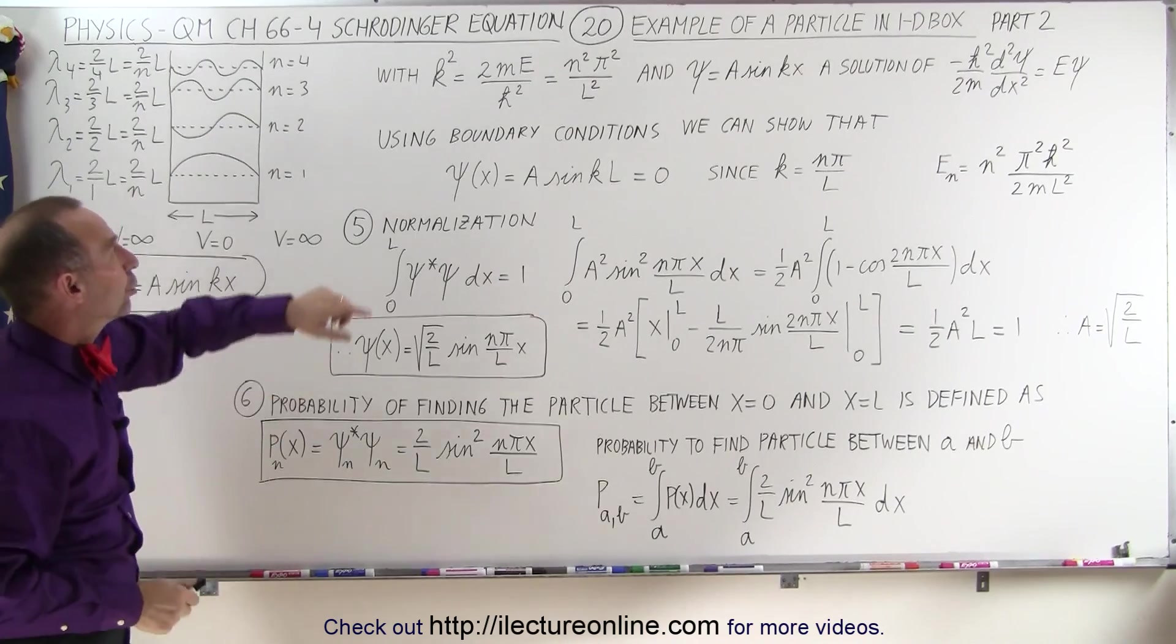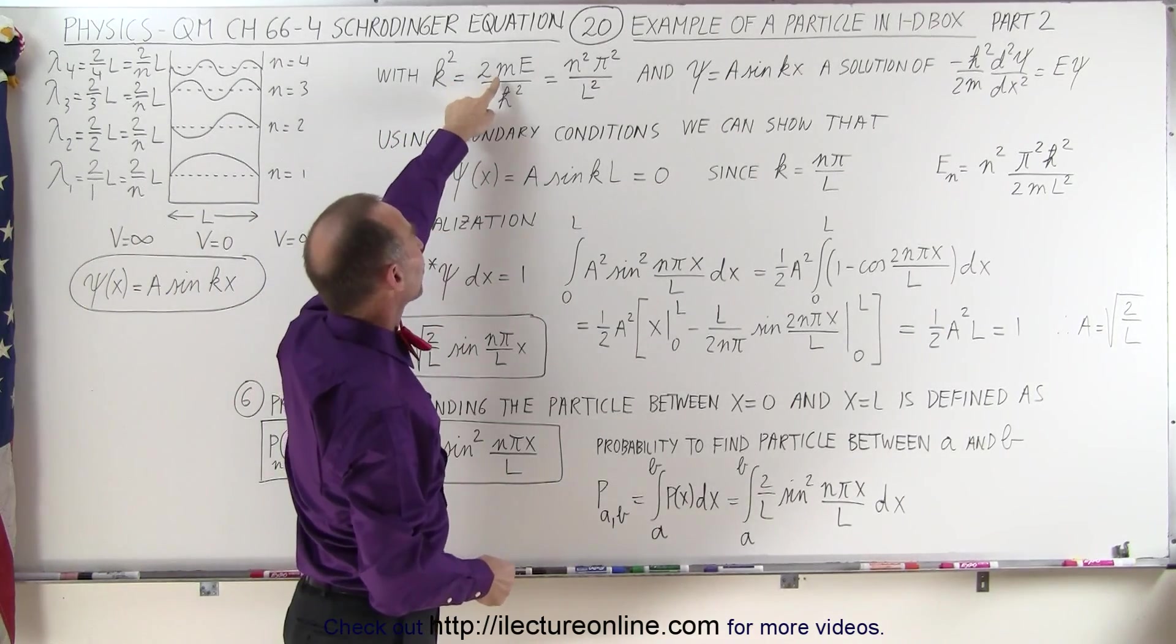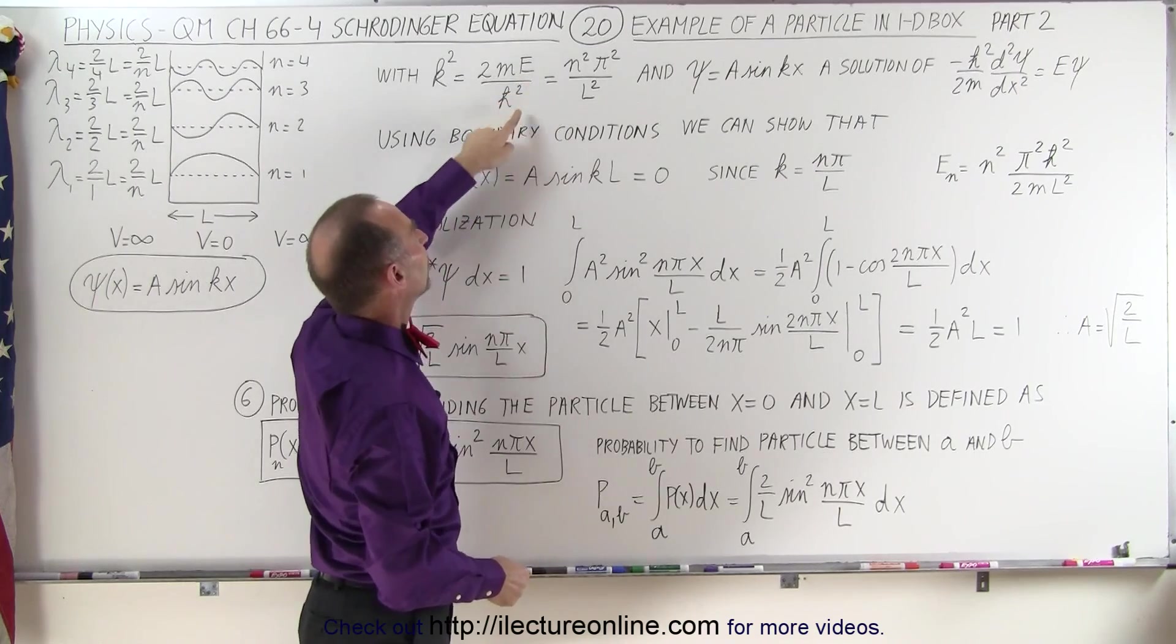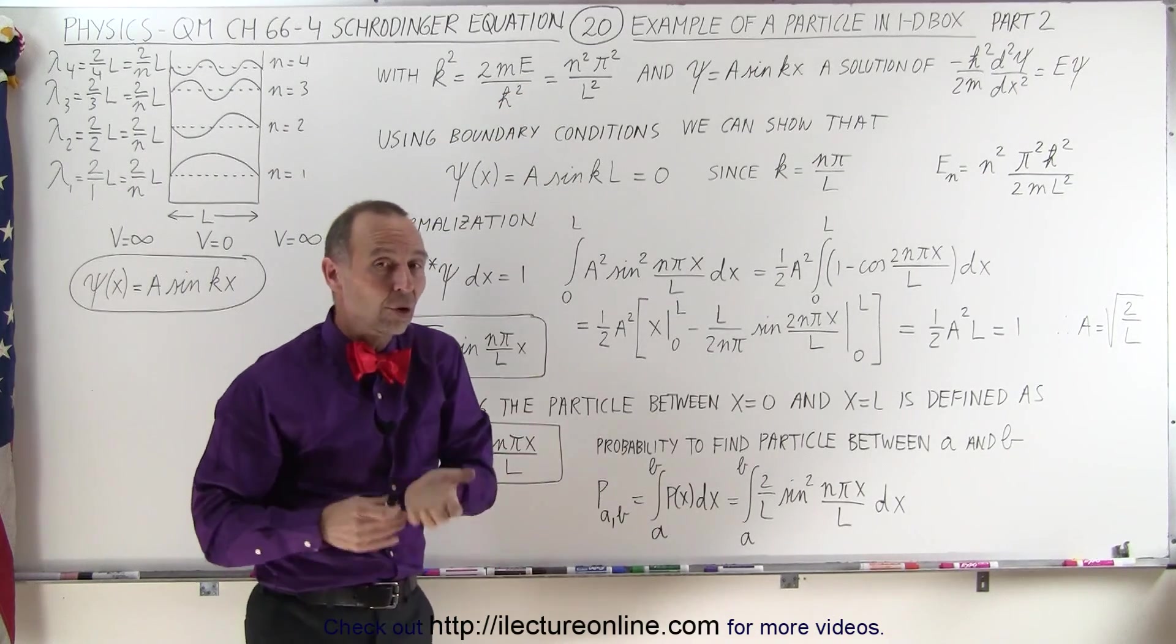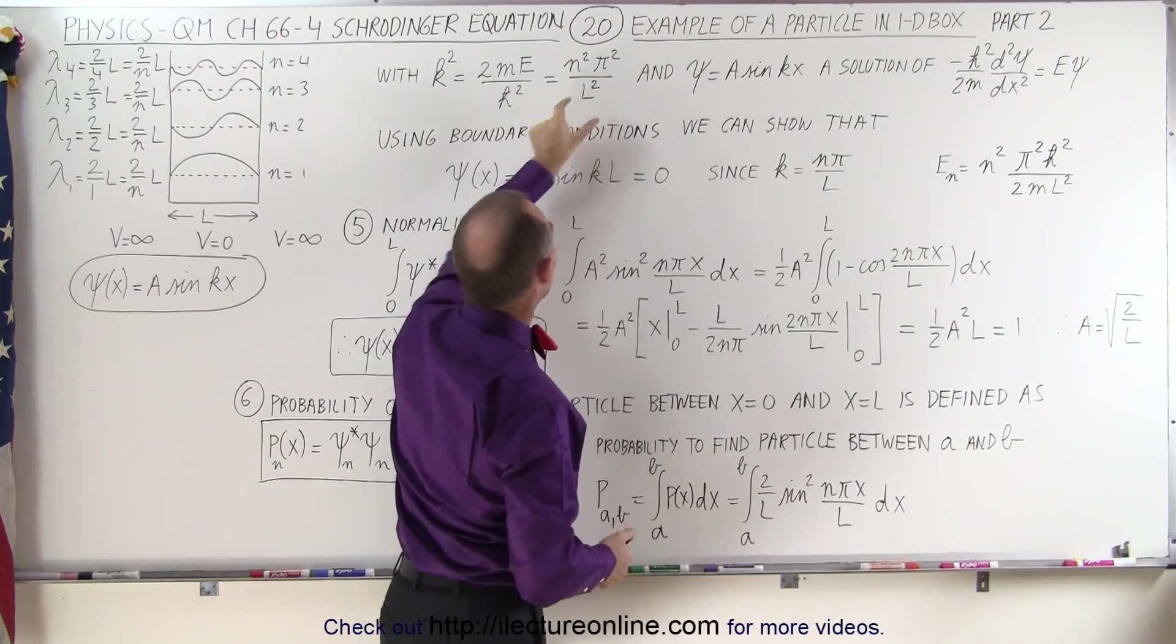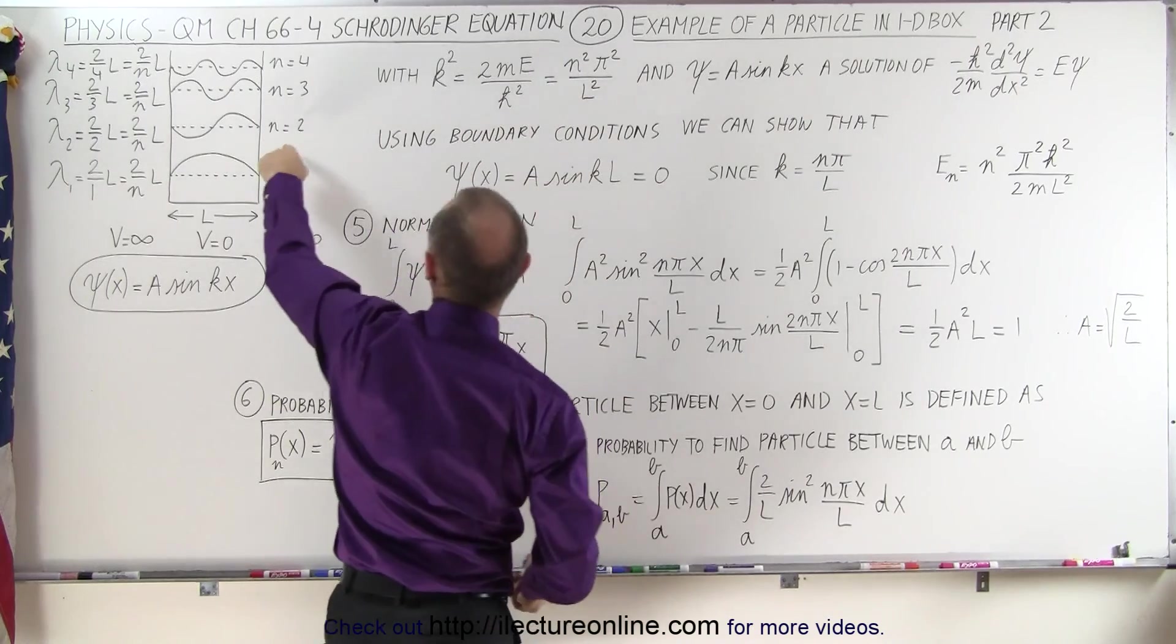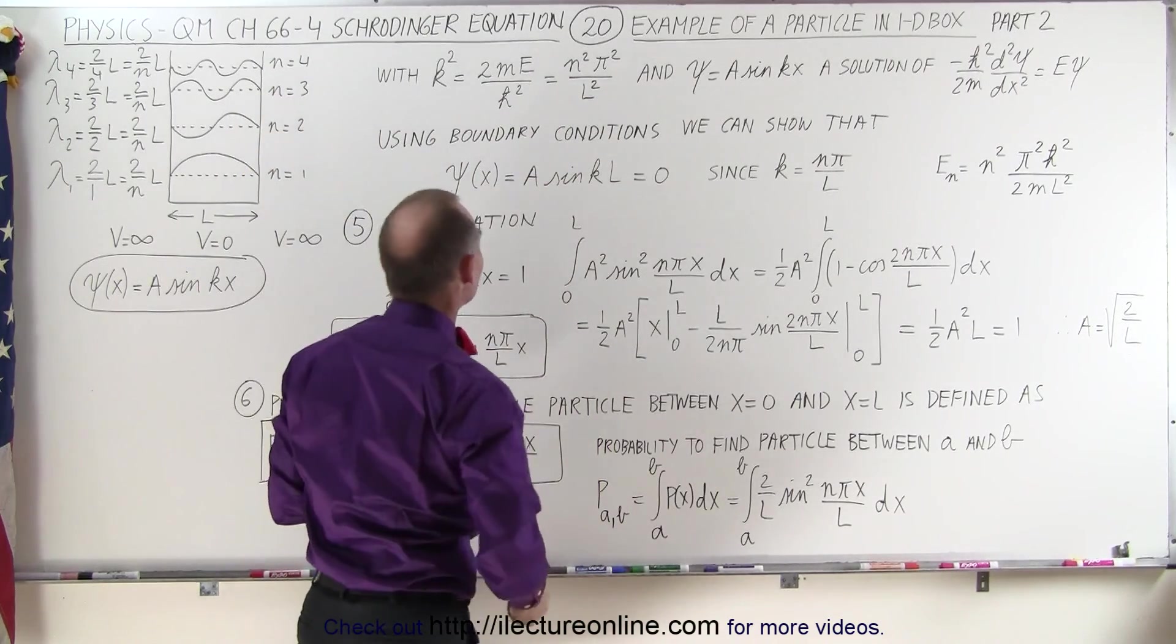We came to the conclusion that the wave number squared can be defined as twice the mass of the particle times the kinetic energy, divided by h-bar squared, which we showed was also equal to n-squared pi-squared over l-squared, l being the length of the box, n being the quantum number describing the energy level.